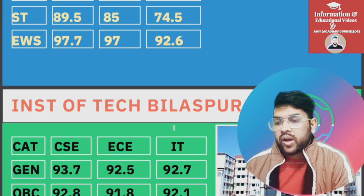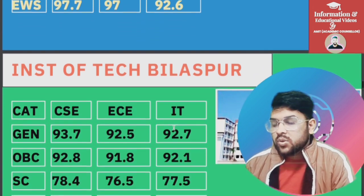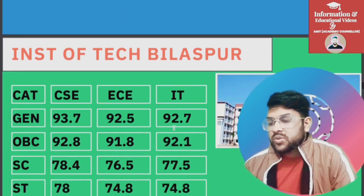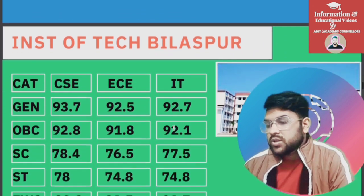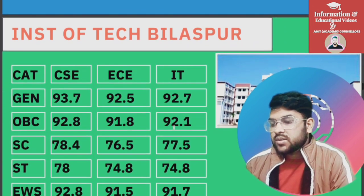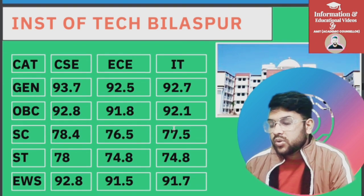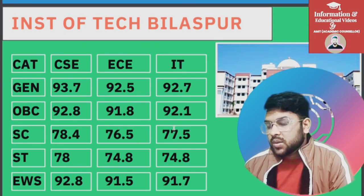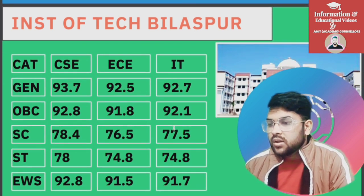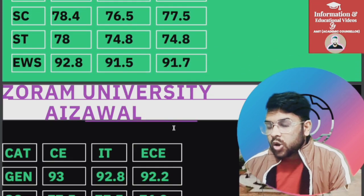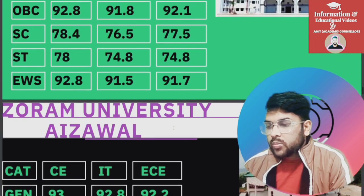For Institute of Technology Bilaspur: General 93.7, OBC 92.8, SC 78.4, ST 78, EWS 92.8 percentile — this is for CS. For EC and IT you can check slide-wise.